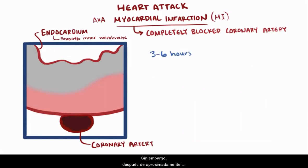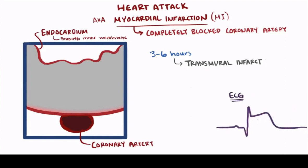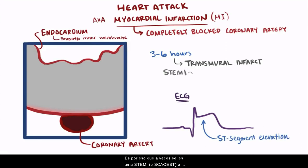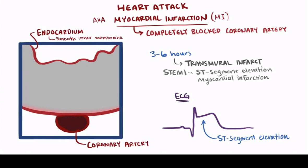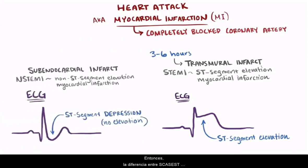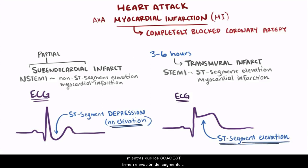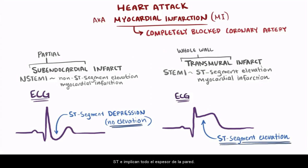An ECG, or electrocardiogram, done at this point typically shows an ST segment depression — it doesn't show ST segment elevation — so sometimes we call this an NSTEMI, which stands for non-ST elevation myocardial infarction. After about 3–6 hours though, the zone of necrosis extends through the entire wall thickness, called the transmural infarct, which shows up as ST segment elevation on ECG — which is why they're sometimes called STEMIs, or ST elevation myocardial infarctions. So the difference is that NSTEMIs involve partial infarct of the wall, whereas STEMIs involve the whole wall thickness.